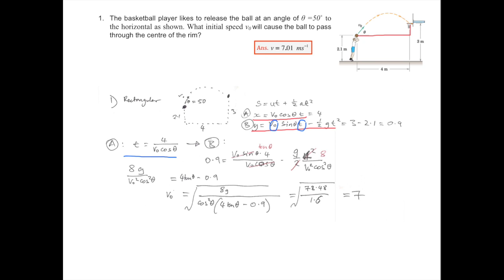Where some of it cancels, the v0s cancel, the sine over cos becomes tan, you have 0.4 and then here you're left with a v0 squared.